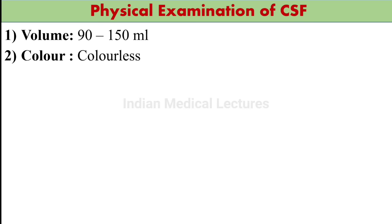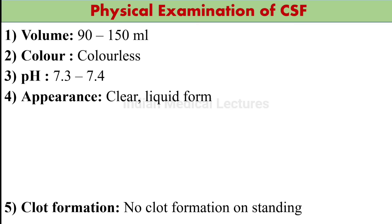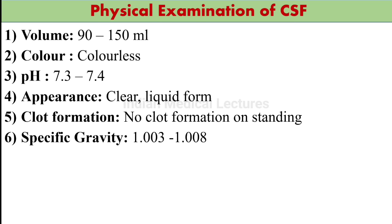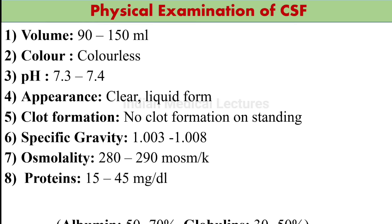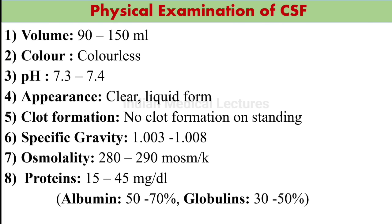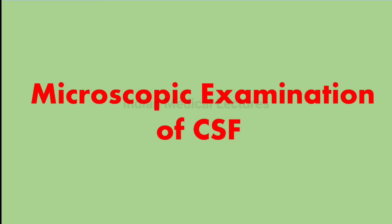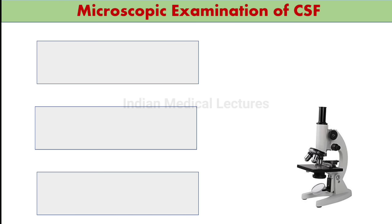Normal CSF values to remember: Volume is 90–150 ml. Color is colorless. pH is 7.3 to 7.4. Appearance is clear liquid. Clot formation: no clot in CSF. Specific gravity is 1.003 to 1.008. Osmolality is 282 to 290. Proteins are 15–45 mg per deciliter. Protein ratio: albumin is 50–70% and globulin is 30–50%. These values may be asked in competition exams.